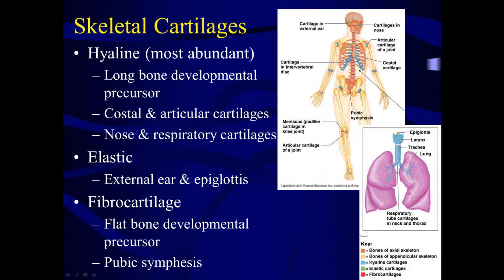The skeleton also has other types of tissues associated with it, not just osseous tissue — you have cartilages, often referred to as skeletal cartilages. There are three basic types: hyaline cartilage, the most abundant, found at the ends of long bones, in the respiratory system, nose, costal cartilages, and articular cartilages; elastic cartilage, found in your external ear and epiglottis; and fibrocartilage, a precursor to flat bone development, found in areas like the pubic symphysis and intervertebral discs.